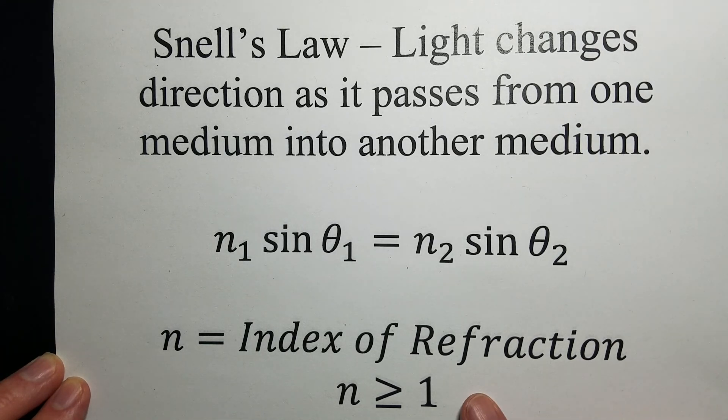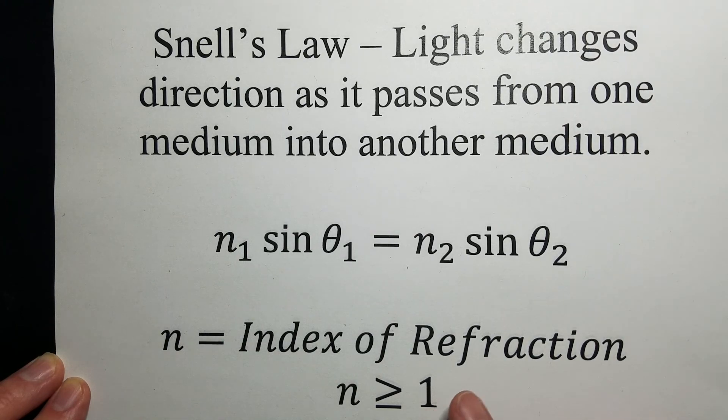Indices and coefficients don't have units. For light in these materials, the lowest index of refraction we have is one. That's a vacuum. Everything else has got to be above that.